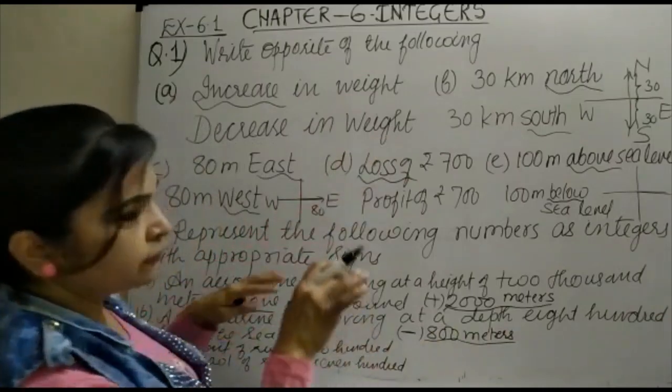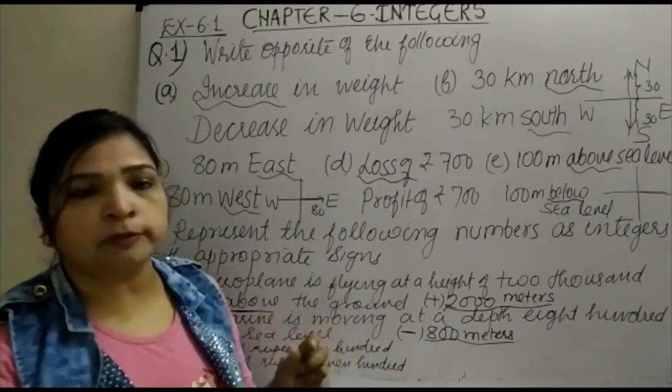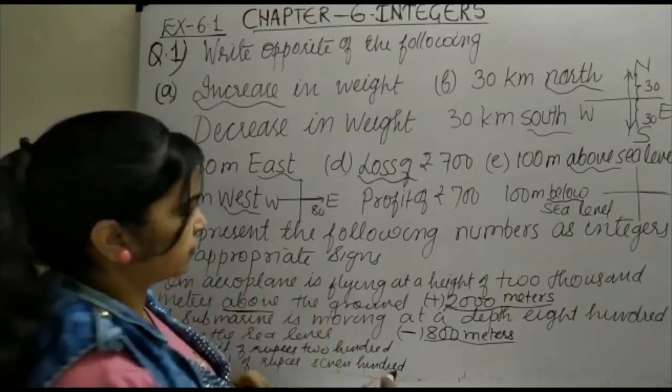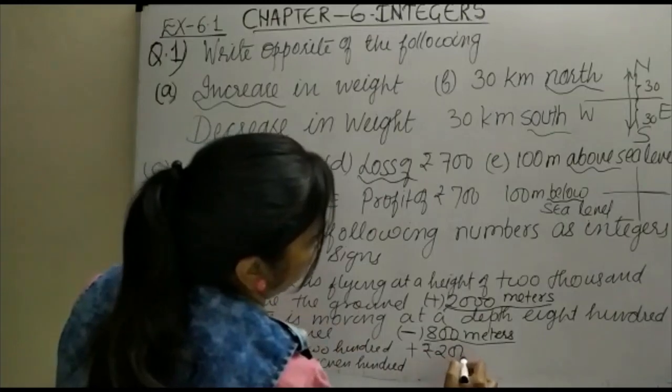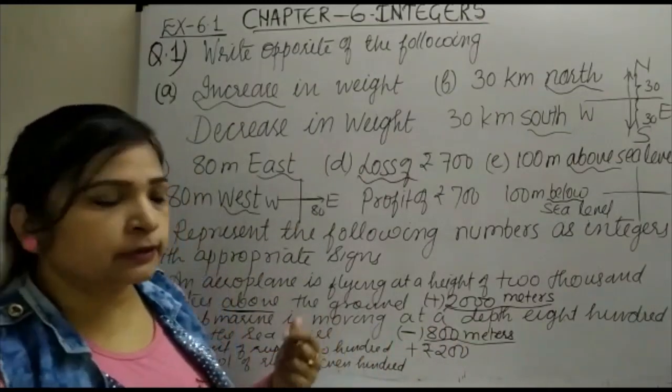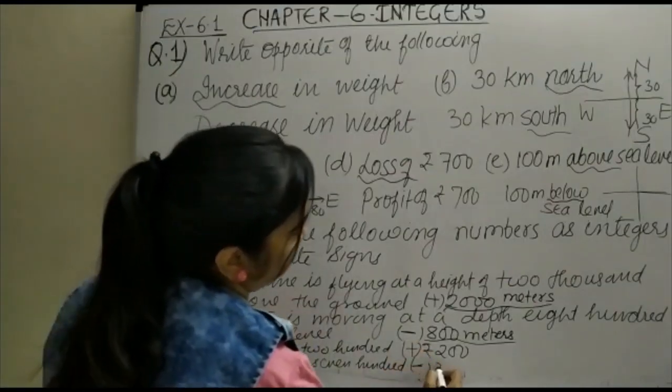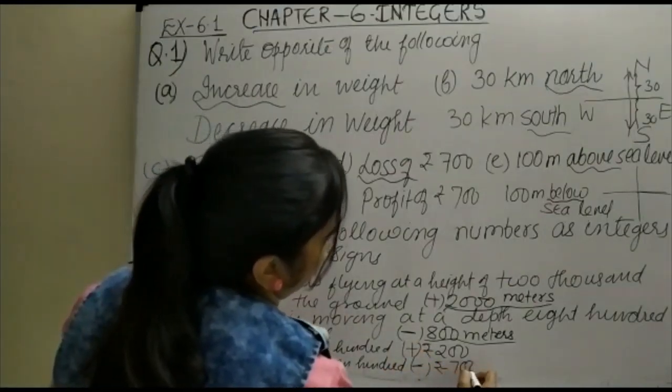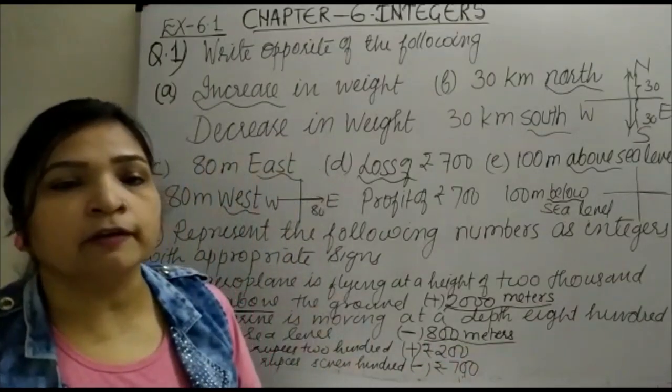Now a deposit of rupees 200. Deposit means you add, so it is plus rupees 200. Then withdrawal of rupees 700, so this becomes minus rupees 700. So this is how according to the given question we have given the answers. Thank you.